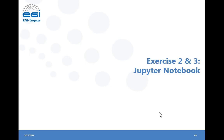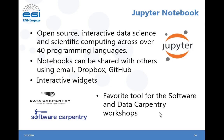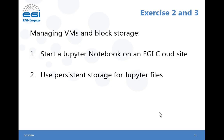In the second part of this session, we'll show you how to use the basic commands of the EGI FedCloud to manage virtual machines, create virtual machines, compute them, and also attach persistent storage. This will be the focus of exercises two and three. In exercise two, you will deploy a Jupyter Notebook on an EGI Cloud site, and in exercise three you will add persistent storage to your virtual machine to store some Jupyter files. Let's start with exercise two.